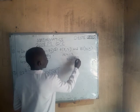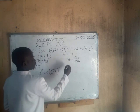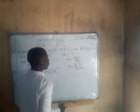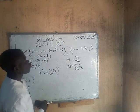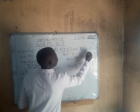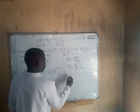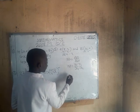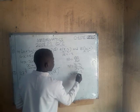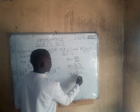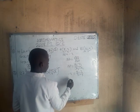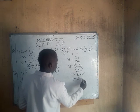The gradient formula is: m equals (y2 minus y1) over (x2 minus x1). We label A(3, 2) as (x1, y1) and B(5, y) as (x2, y2). The gradient is negative 2. Substituting: negative 2 equals (y minus 2) over (5 minus 3), which simplifies to (y minus 2) over 2.